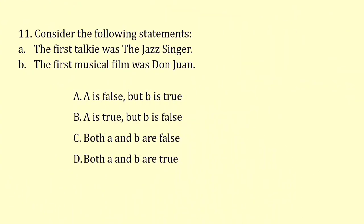Consider the following statements. The first talkie was The Jazz Singer — this statement is true. The first musical film was Don John — this is wrong. The first musical film is also The Jazz Singer. So the correct answer is A is true, B is false.